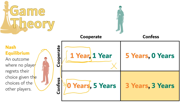We can also see that if we look at player B, they're getting a payoff of one year. If they change to confess, they would have gotten a different payoff. And this is the key to understanding the Nash Equilibrium: we think about whether the player regrets their own choice. They can't regret the choice of the other player — we only think about what would change if they change their choice only. Since player B would also regret their choice, we know that this outcome is not a Nash Equilibrium.